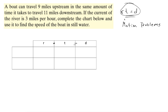The rows of the table are upstream and downstream — that's usually how it goes with these boat problems. Similar problems include an airplane flying against the wind or with the wind. There's a whole class of problems that use the same chart.